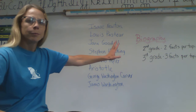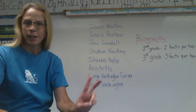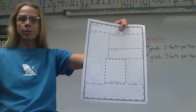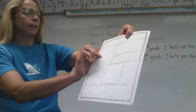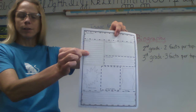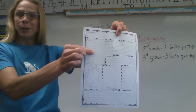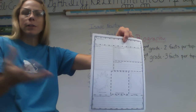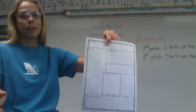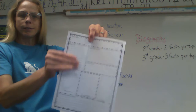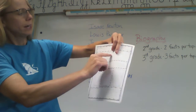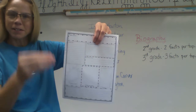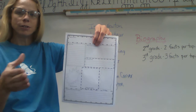Second graders are going to need to get two facts per topic, and third graders three facts per topic. This shows you the topics. The first topic is early life — facts about the early life of your person, like when and where they were born, how many people were in their family, or where they grew up. You are welcome to put more than two or three facts. Over here you have why is he or she famous, so you'll need two or three facts there. And here we have interesting facts — two or three interesting facts about your person.